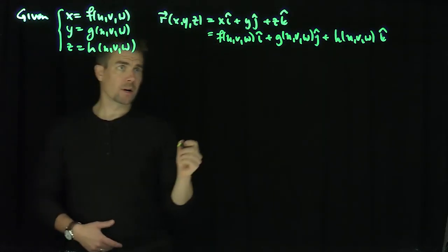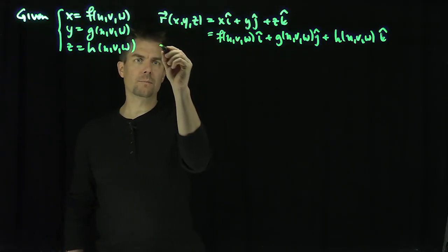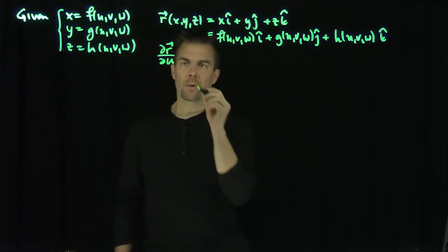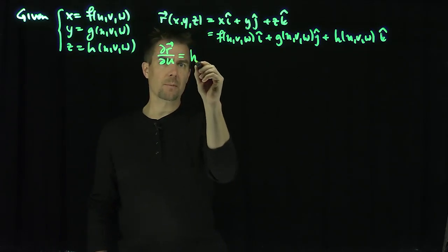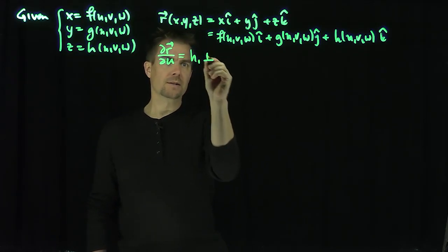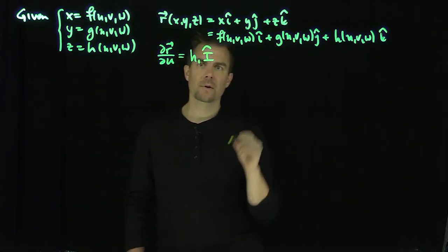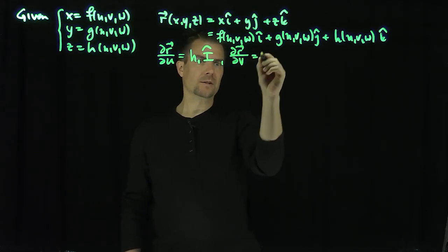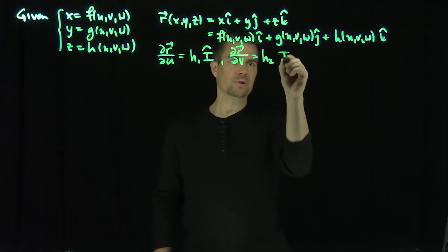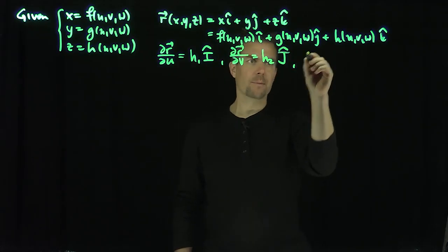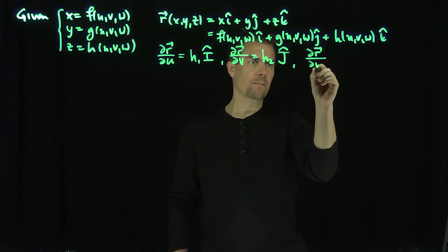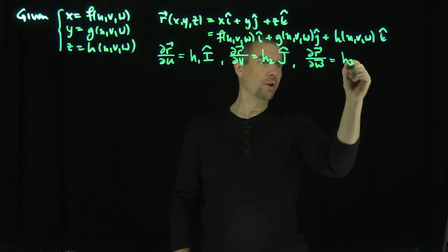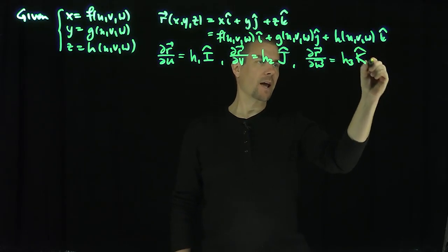And then we get these three vectors. We're going to get ∂r/∂u, and ∂r/∂u is going to be some number h₁ — some normalizing factor — times a unit vector î. ∂r/∂v is going to be h₂ times a unit vector ĵ. And ∂r/∂w is going to be h₃ times a unit vector k̂.